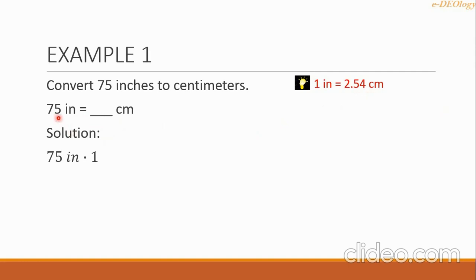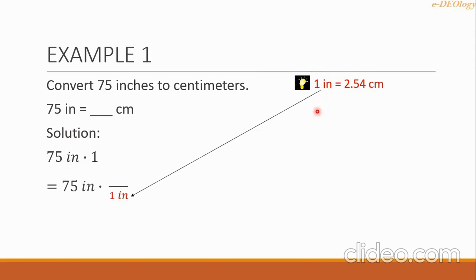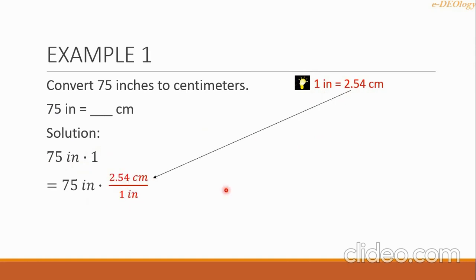For our solution, we copy the problem and multiply this value by a fraction equal to 1, which comes from the conversion equation. We need to change inches into centimeters, so we put 1 inch in the denominator and 2.54 centimeters in the numerator. This is intentional so that we can cancel the inches unit, and only the centimeter unit remains.